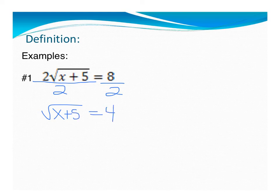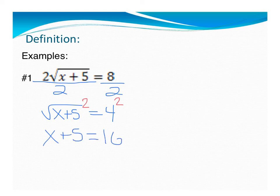Now I want to get rid of a square root, so I'm just going to square both sides. And I'm left with x plus 5 equals 16. Now I'm going to subtract, and I get x equals 11.